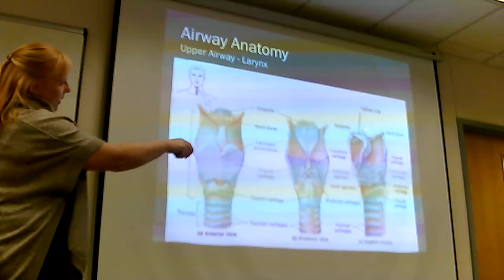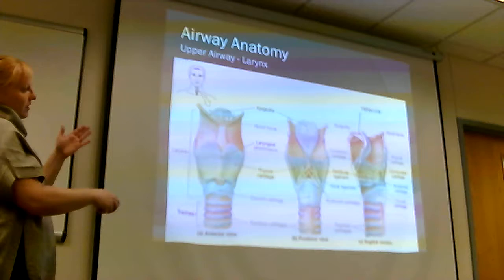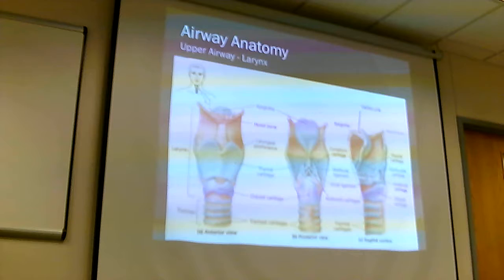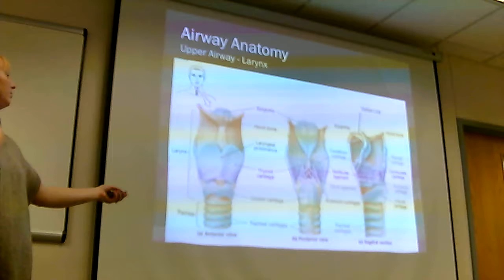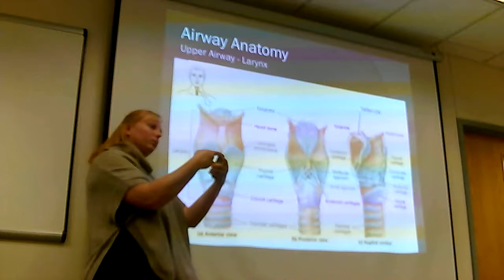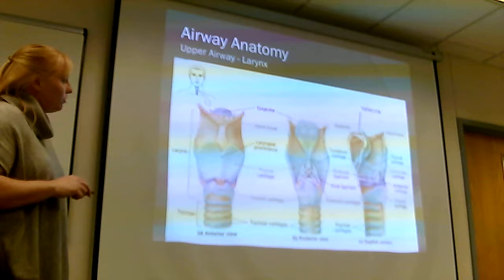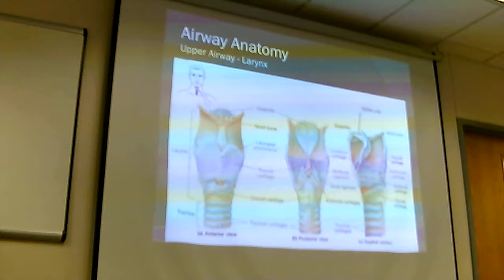Another important structure is the vallecula. The curved blade during intubation goes into this spot, where there's a ligament — the hypoepiglottic ligament — that when you push on it, lifts the epiglottis up to reveal the airway. Tracheal cartilages are present anteriorly and you can feel them, but posteriorly the trachea is soft with no complete cartilage ring. Also note the cricothyroid ligament is between the thyroid and cricoid cartilages — more commonly called the cricothyroid membrane.